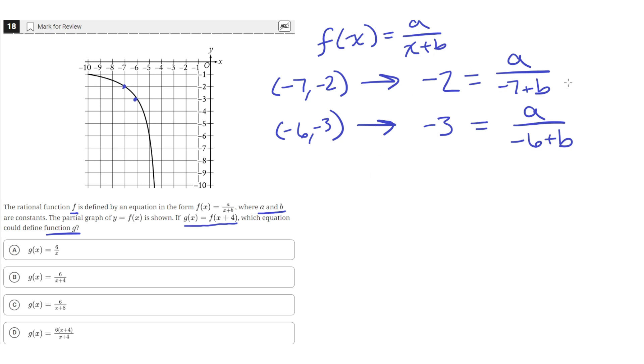From this first equation, let's multiply both sides by this denominator. Negative 2 times negative 7 is 14. Negative 2 times b is negative 2b, which is just going to equal a.